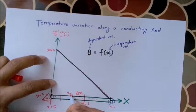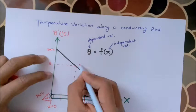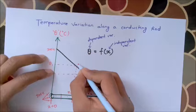This is x1 and this is x2. This is the temperature of this point, which is theta 1. This is the temperature of this point.